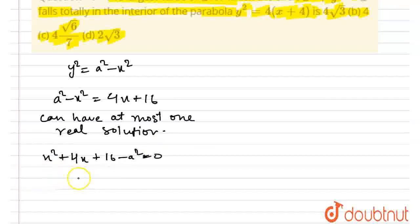The discriminant should be less than or equal to 0. That is, B square, 16, 4 square is 16, minus 4 into 1 into C, that is, 16 minus A square is less than or equal to 0.